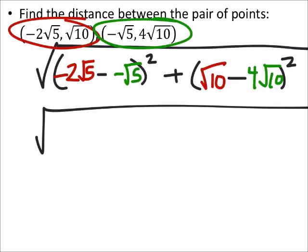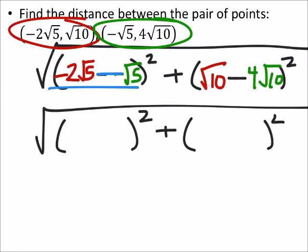So this now becomes the square root of combining my like terms. We haven't squared anything yet. I've got negative 2 square root of 5, and that's plus 1 square root of 5, so that's just a negative square root of 5. And then I've got 1 square root of 10 minus 4 square root of 10, which is negative 3 square root of 10.